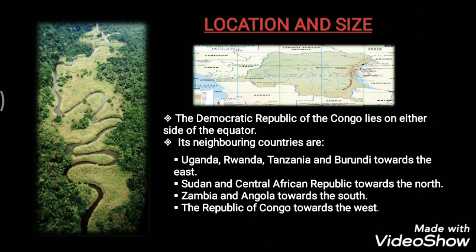The Democratic Republic of Congo lies on either side of the equator — half in the northern hemisphere and half in the southern hemisphere. Its neighboring countries are Uganda, Rwanda, Tanzania, and Burundi to the east; Sudan and the Central African Republic to the north; Zambia and Angola to the south; and the Republic of Congo to the west.